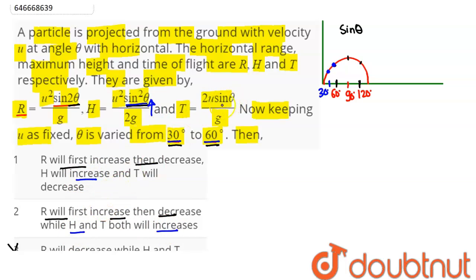Now coming to time, here sinθ. So we can see as theta increases from 30 to 60 degrees, sinθ value from 30 to 60 shall also increase, which means time of flight will also increase. So here it says time will decrease, time of flight decreases is incorrect.